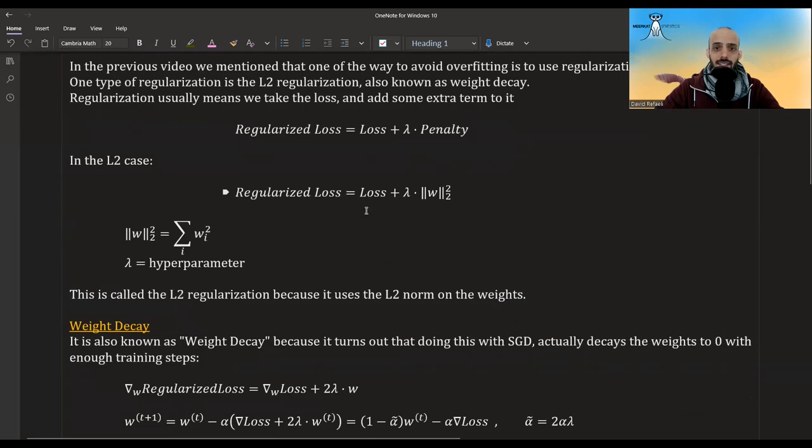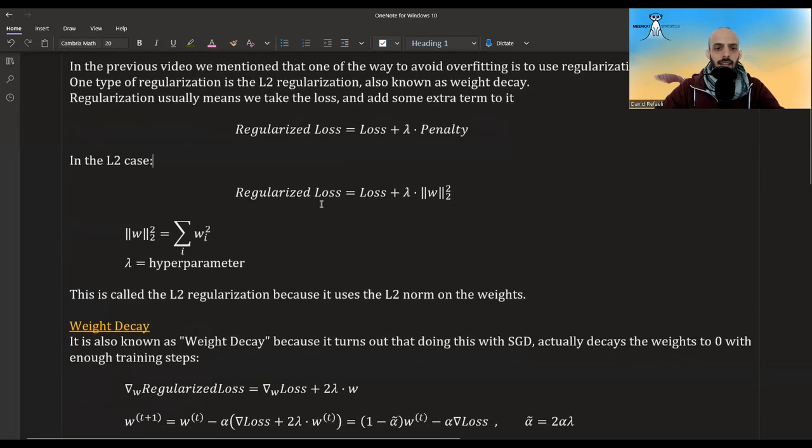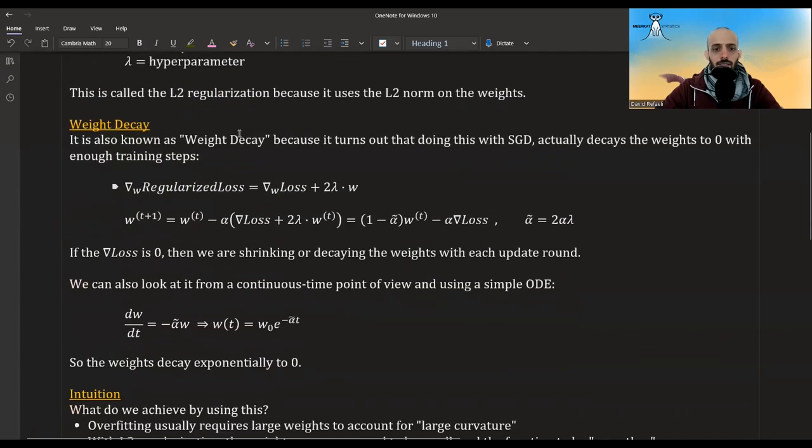You add this to the loss and then do gradient descent. You take the derivative with regards to the weights, and take a step in the direction opposite of the gradient. It's called L2 regularization because it uses the L2 norm, but it's also known as weight decay. Why is it called weight decay?